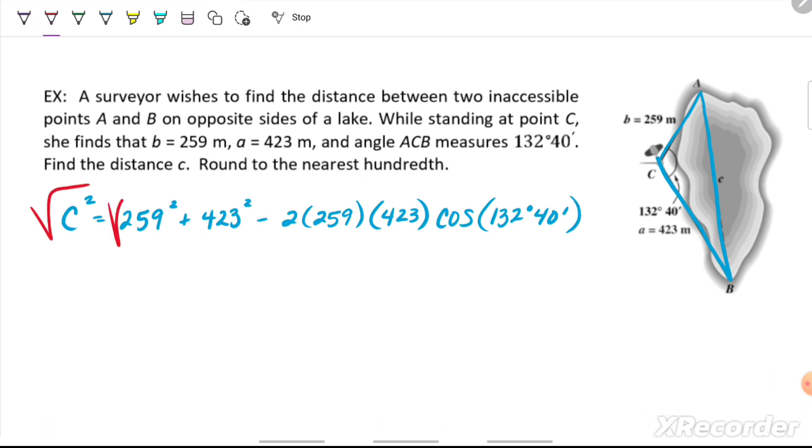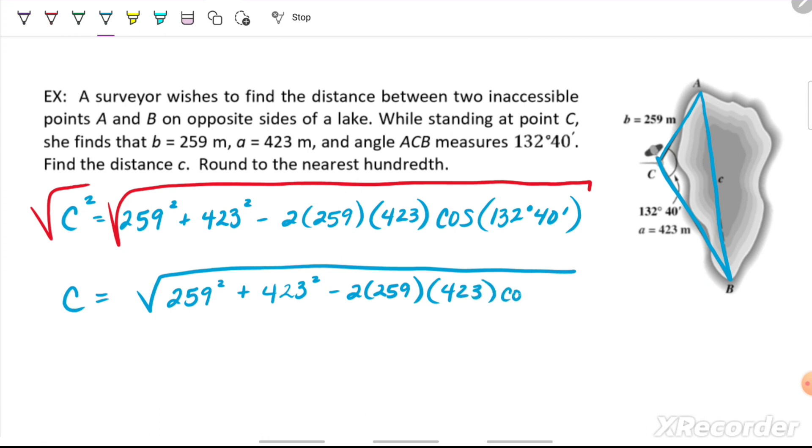We'll need to take the square root of both of these to find our side C. And as always, I would just plug this whole radical in my calculator at one time. It's too easy to make a mistake when you do it individually or have some kind of rounding error. So we just want to plug it all in at one time. Plugging into our calculator and rounding to the nearest hundredth, we get side C to be 628.10, and our unit is meters.